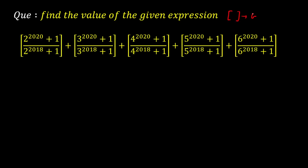Big brackets mean the greatest integer function. The expression is [2^2020 + 1] / [2^2018 + 1] and so forth up to the fifth term. The only difference between these terms is the base is changing - from 2 to 3 to 4 to 5 to 6.